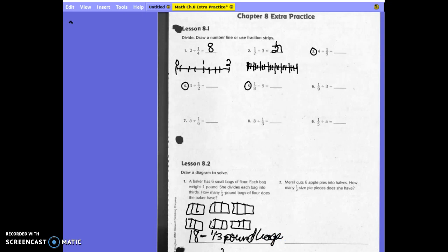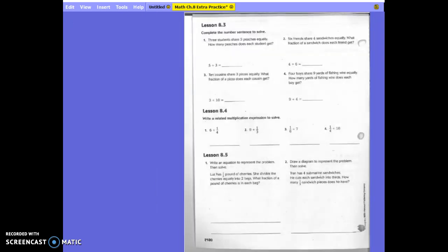Let's try the next page. It says complete the number sentence to solve. 3 students share 5 peaches equally. How many peaches does each student get? I want to see some work. 3 students share 5 peaches. So 5 divided by 3.